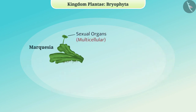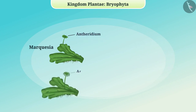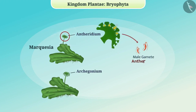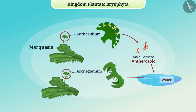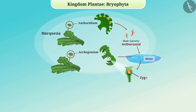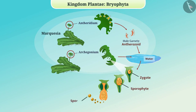In bryophytes, sexual organs are multicellular. The male sex organ is called antheridium and the female sex organ is called archegonium. From the antheridium, the male gamete antherozoid is developed, which is released into water. Here, fertilization occurs with the female gamete egg and the zygote is formed. It develops into a sporophyte, and some of its cells are converted into spores, which develop and produce new organisms.